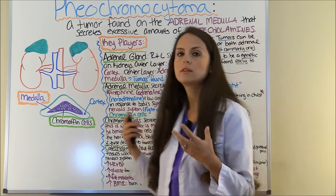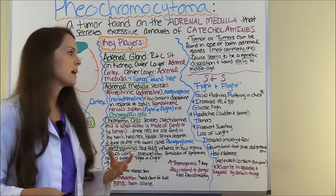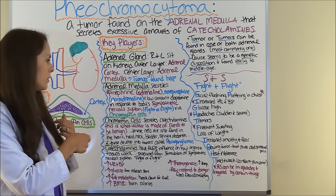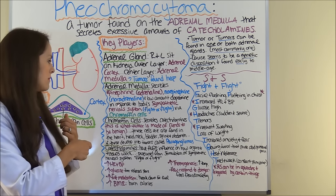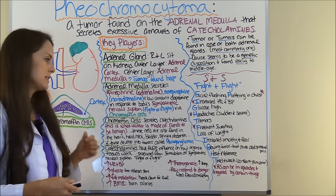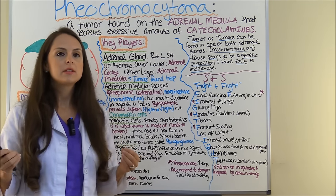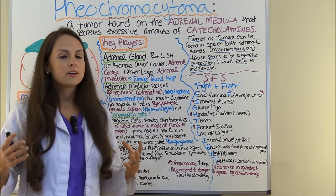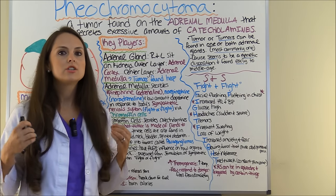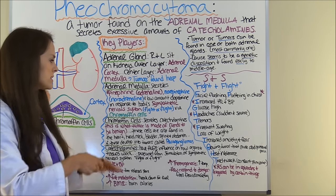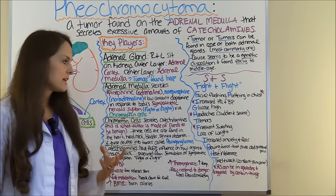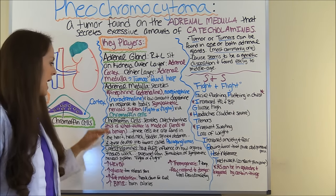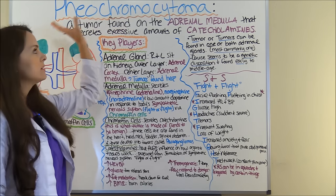The adrenal medulla, via the chromatin cells, secretes catecholamines: epinephrine (also called adrenaline), norepinephrine (also known as noradrenaline), and low amounts of dopamine, in response to your body's sympathetic nervous system. The sympathetic nervous system stimulates your body to fight or fly — for instance, when you're walking in the woods and you see a grizzly bear, your body secretes these catecholamines to get you out of there. In pheochromocytoma, the tumor tends to be made up of these chromatin cells.